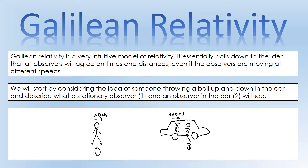We're going to start by considering the idea of someone throwing a ball up and down in a car, and describe what a stationary observer and an observer in the car will see. What we're doing here is carrying out a thought experiment — we're just going to think about the consequences. We've got a person who's stationary and a person inside a car that is moving, inside the reference frame of the person throwing the ball.